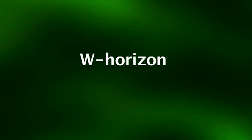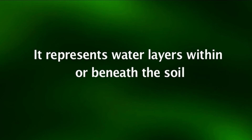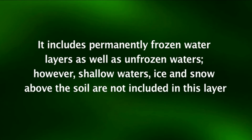The W or O horizon represents water layers within or beneath the soil. It includes permanently frozen water layers as well as unfrozen waters. However, shallow waters, ice, and snow above the soil are not included in this layer.